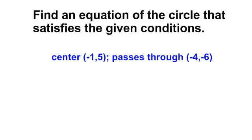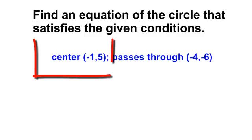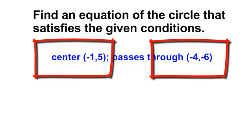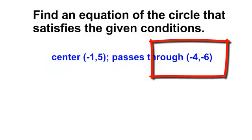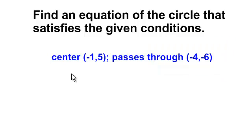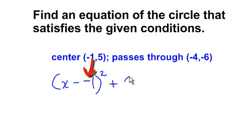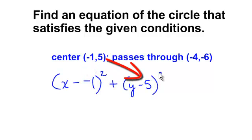Find an equation of the circle that satisfies the given conditions. I want a circle that has a center at negative 1, 5, and it passes through the point negative 4, negative 6. So I do have the center, and according to my circle formula, I will have x minus negative 1 squared plus y minus 5 squared, and that is equal to the radius squared.